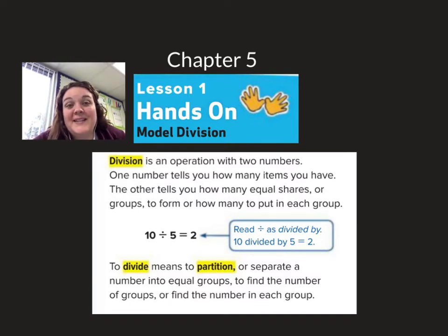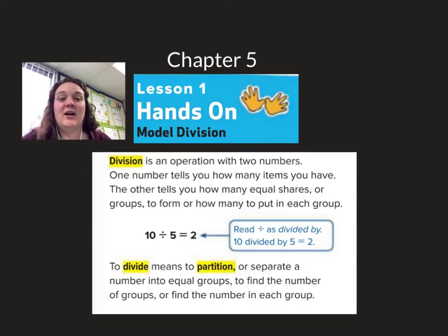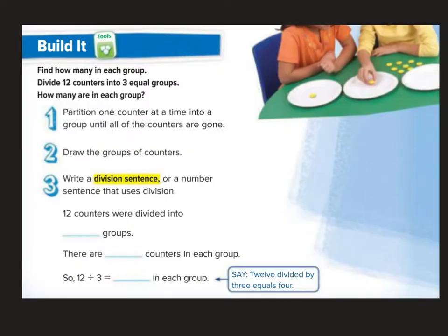Let's take a look at division. Let's do our first example here. It says: find how many in each group. Divide 12 counters into 3 equal groups. How many are in each group?